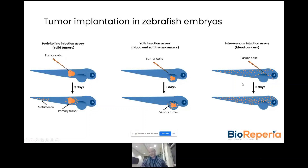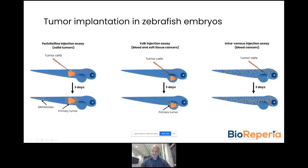For hematological malignancies, you can also consider injecting the tumor cells intravenously and then establish the tumor in the bloodstream of the zebrafish — systemic cancer, similar to what is experienced in patients. This is also a way to directly seed metastasis in the fish: solid tumor cells injected IV will then grow in the metastatic niche of the caudal hematopoietic plexus.